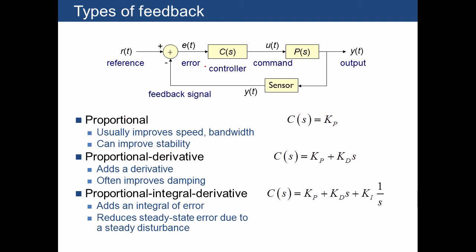We've introduced two types of control for a feedback control system, proportional and proportional derivative control. The next topic is the effect of integral control and what it's for, for improving performance.